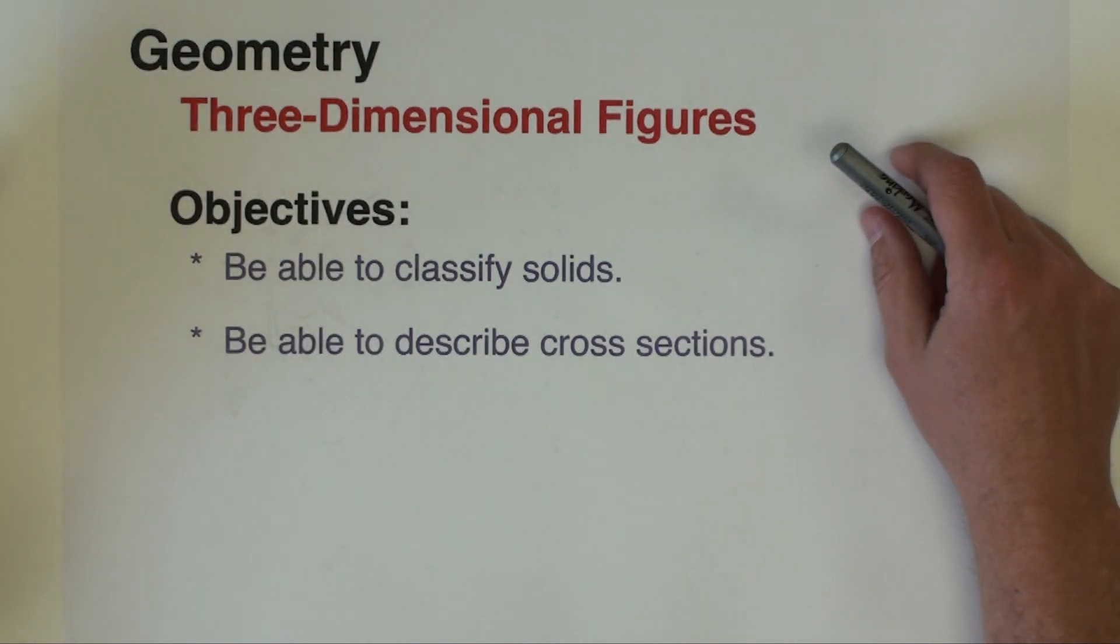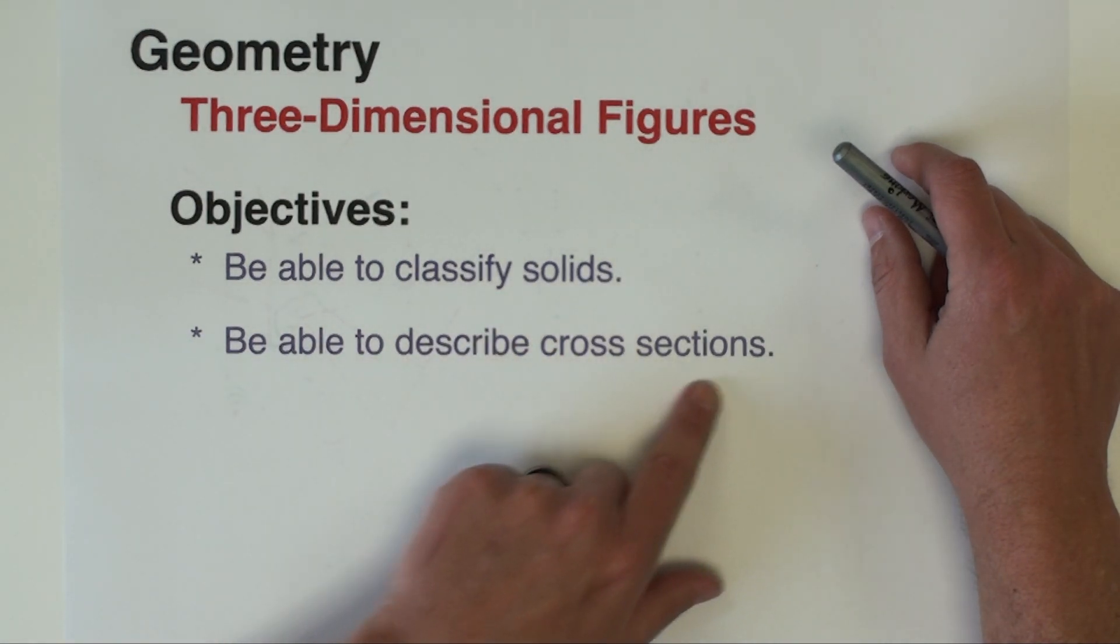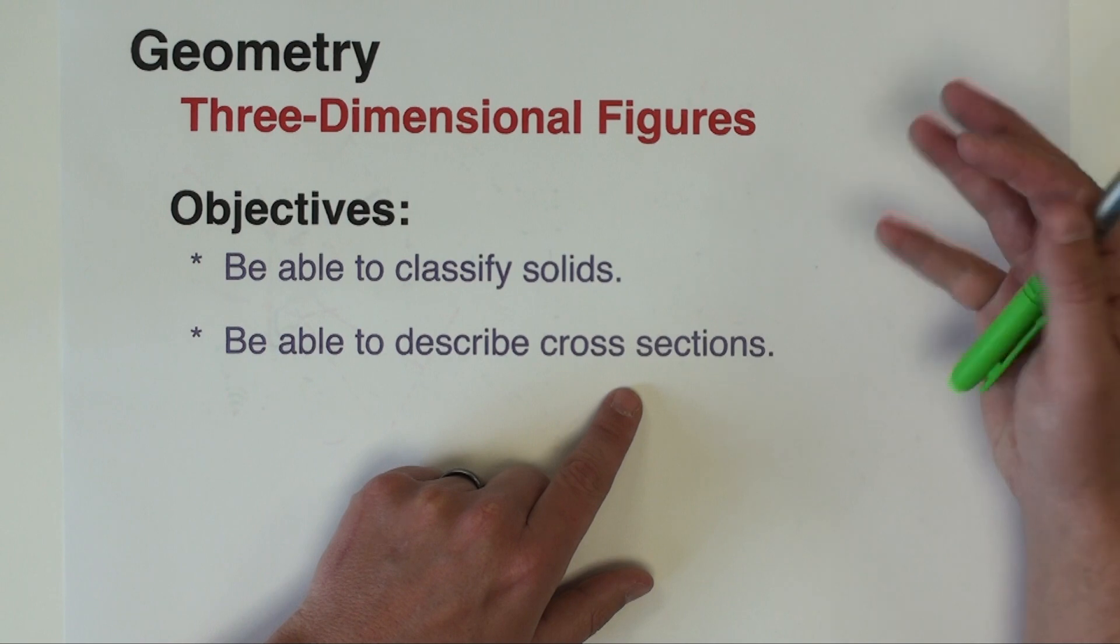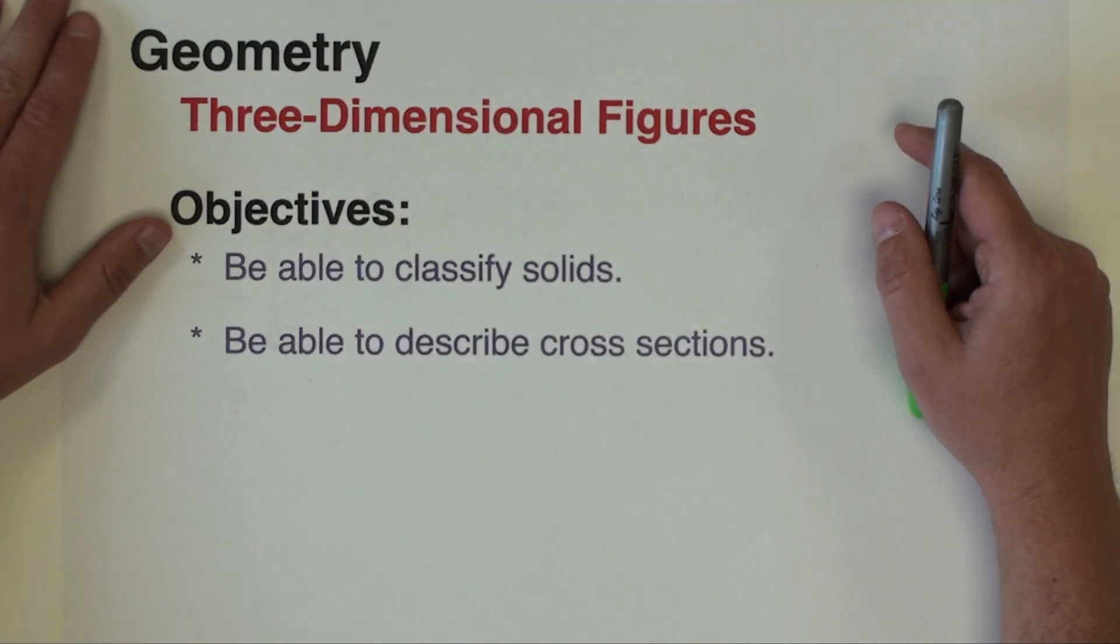So we're going to talk about what kinds of three-dimensional figures we have, we're going to talk about how we can classify solids, and then we're going to look at something called cross-sections which are just slices of three-dimensional figures. All right let's jump right in.